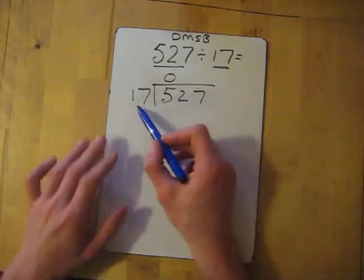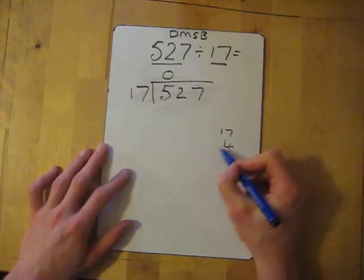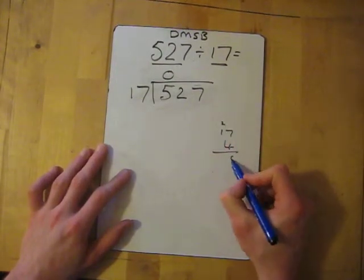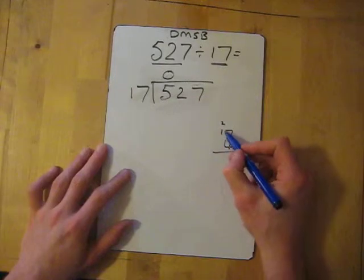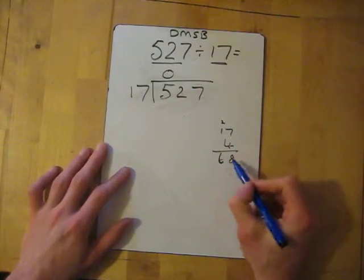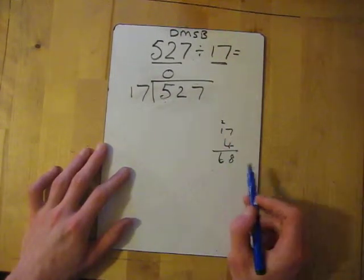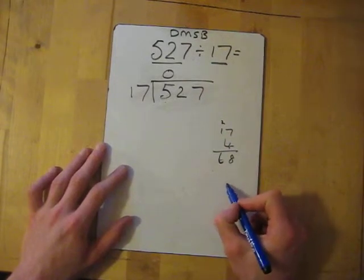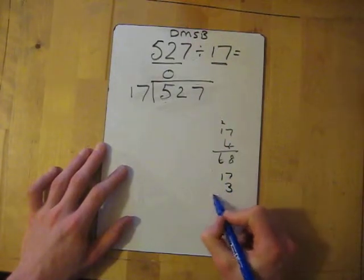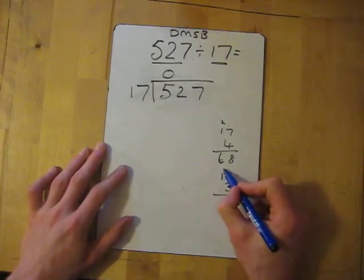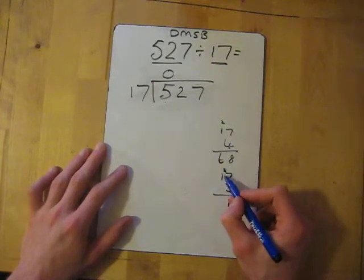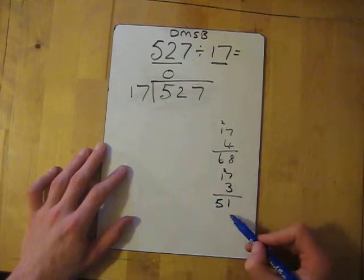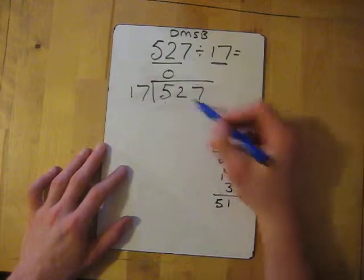So do 4 times 17 - quick multiplication which gives me 4 times 7 is 28, 4 times 1 is 4, so that's 68. Now that is too many, it's more than 52, so it needs to be less. Let's do 3. 3 times 17 is 21, 3 times 1 is 3, so that's 51. So it actually fits in 3 times.